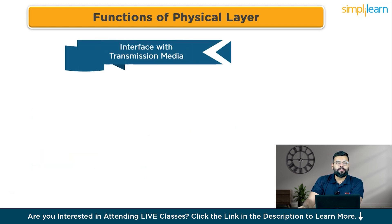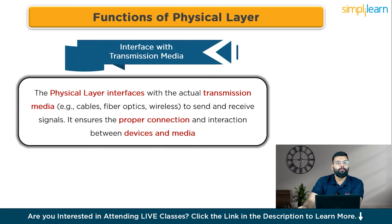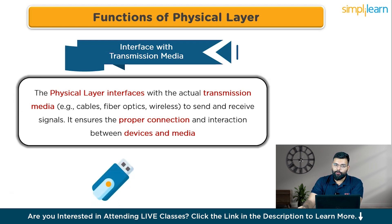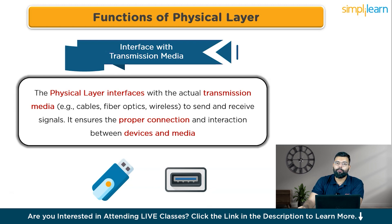Function four is interface with transmission media. The physical layer interfaces with the actual transmission media — cables, fiber optics, and wireless — to send and receive signals. It ensures the proper connection and interaction between devices and media. For example, consider plugging a USB drive into a computer: the USB port (physical layer) enables the drive to communicate with the computer by providing the physical connection.